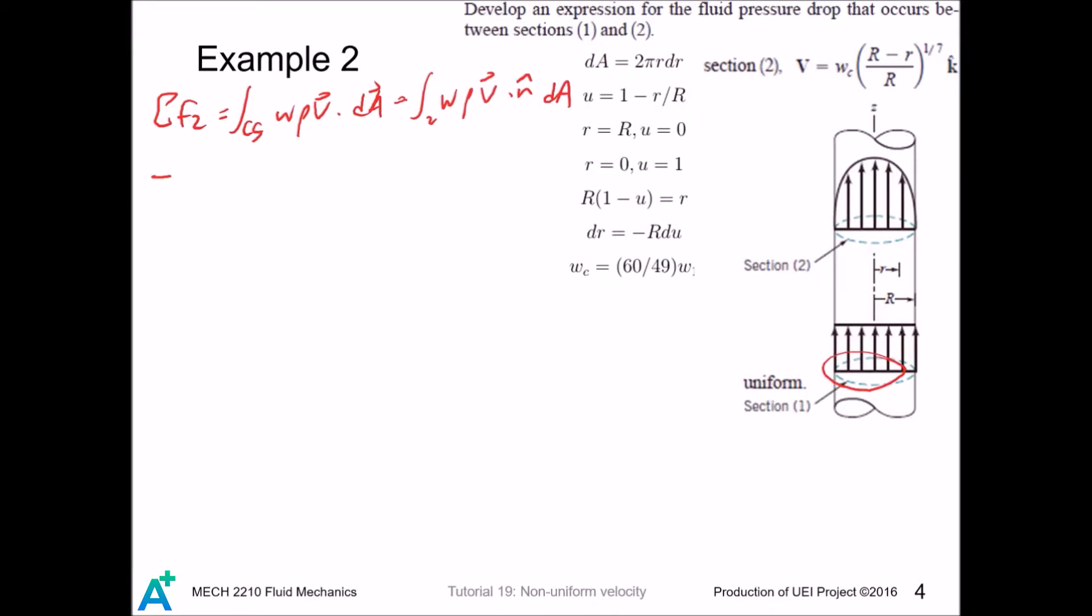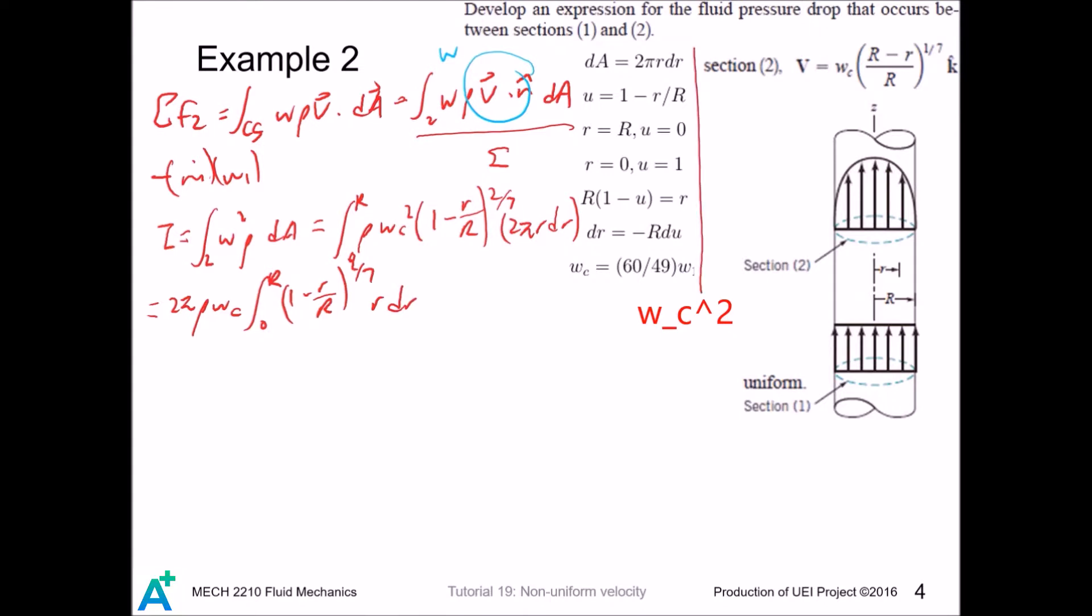And at area 1, the velocity profile is still uniform, and we can pull out the velocity. It is negative because it is going into the control volume. And we let this integral as i. As in the previous slide, this dot product is just W, so i is just... And just like in the previous slide, and we pull out all the constant.